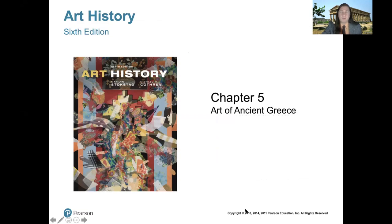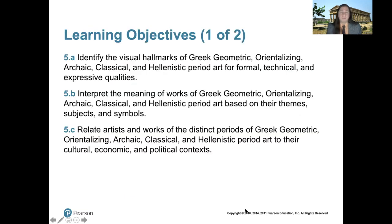We'll start with Chapter Five, Art of Ancient Greece, which builds off the stuff we covered in Chapter Four. This is the same geographic area, the Aegean, although they expand outward. There are basically five periods that art historians divide Greek art into: geometric, orientalizing, archaic, classical, and Hellenistic.